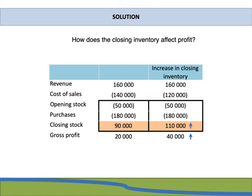Now, keeping all amounts the same but increasing closing inventory by R20,000 to R110,000, the cost of sales is reduced from R140,000 to R120,000. This higher closing inventory results in an increase in gross profit from R20,000 to R40,000. Therefore, an increase in the value of stock on hand increases profit, because closing inventory is deducted from cost of sales — it is stock still on hand that will only be sold in the following year.